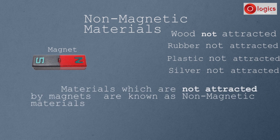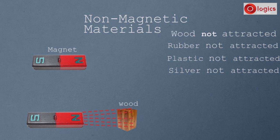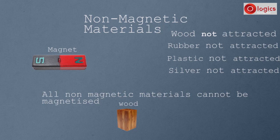Materials which are not attracted by magnets are known as non-magnetic materials. Let's take wood — it is a non-magnetic material. This piece of wood cannot become a magnet after any process; it does not act as a magnet. All non-magnetic materials cannot be magnetized.